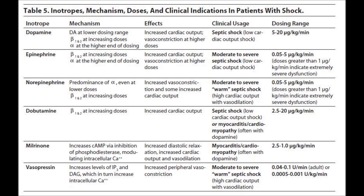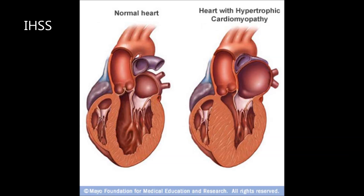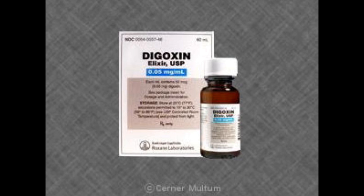Inotropes increase cardiac contractility and cardiac output. Examples include dopamine, dobutamine (Dobutrex) IV only, and digoxin (Lanoxin) IV or PO. In addition to increasing contractility, digoxin slows heart rate and AV conduction in atrial fibrillation and flutter, and may cause changes in mental status. Be very careful giving digoxin to IHSS patients — those with a large septum in the left ventricle. Caution: hold if heart rate is less than 60; check potassium and notify the physician if low.